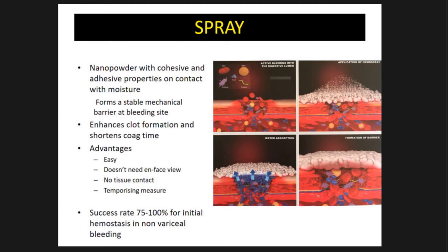There's a new hemostatic spray on the market — a nano powder with cohesive and adhesive properties that activates on contact with moisture, forming a stable mechanical barrier at the bleeding site. You put the catheter down and the tech sprays it; it coats the area without needing direct tissue contact. It's easy to use, doesn't require precision contact, and can be used as a temporizing measure when advanced endoscopy is unavailable or if transfer is needed. Success rate is about 75–100%. We just got this hemospray in our endoscopy suite.